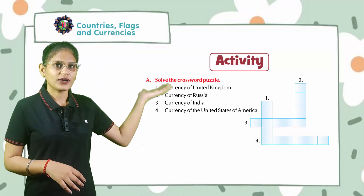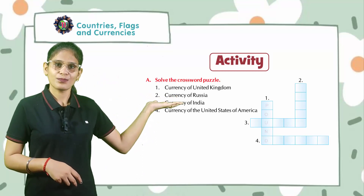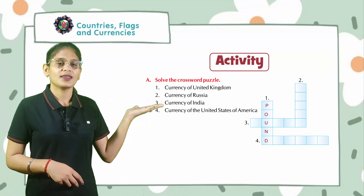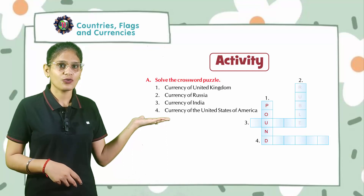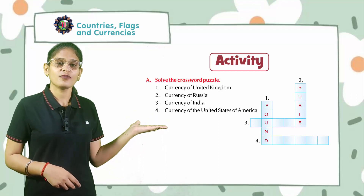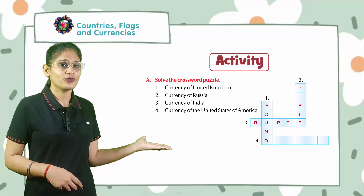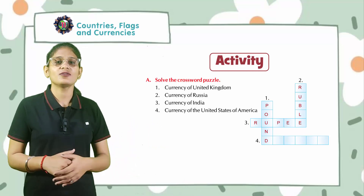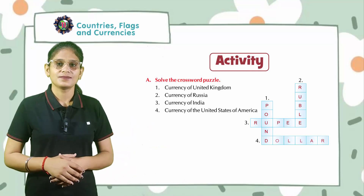Look at the first currency: United Kingdom — pound. Second currency: Russia — that is ruble. Third currency: India — rupee. Currency of the United States of America — dollar.